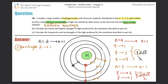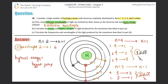Now let's move on to B. B says: calculate the lowest and highest energies of light produced by the transitions described in part A. Out of these 6 different examples, one is going to be the lowest amount of energy while the other is going to be the highest. The highest energy would be the biggest jump. Out of all these, which one is the biggest jump? It was from 4 to 1. So from 4 to 1, that would be the highest energy.